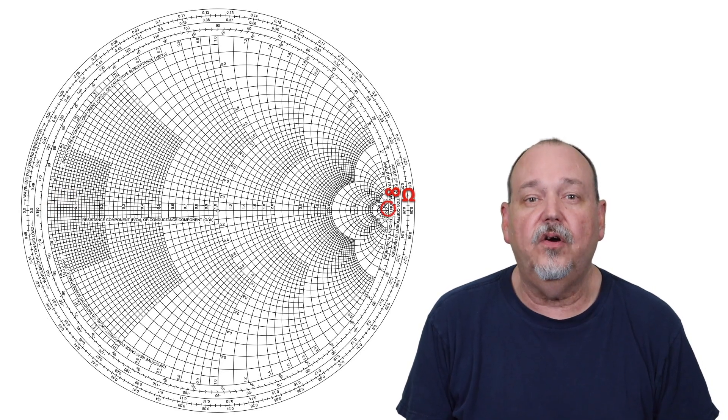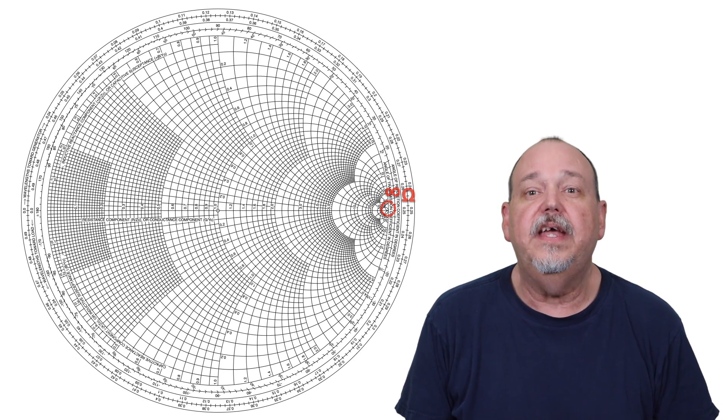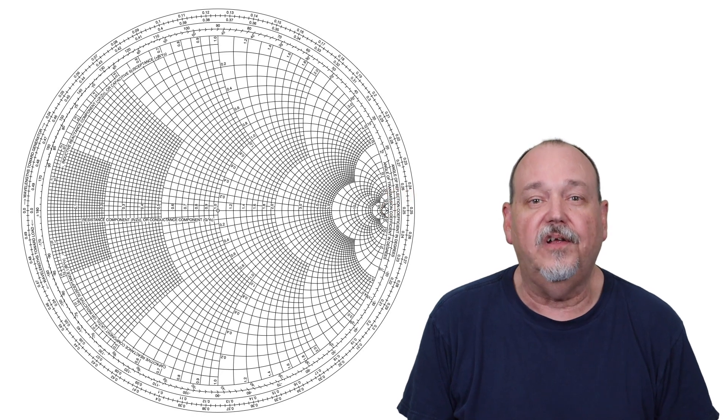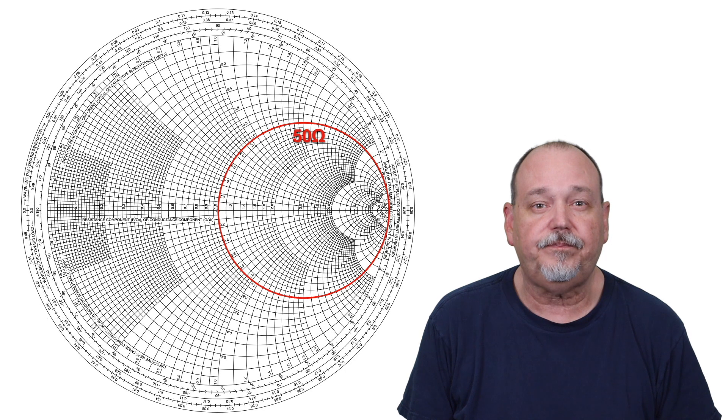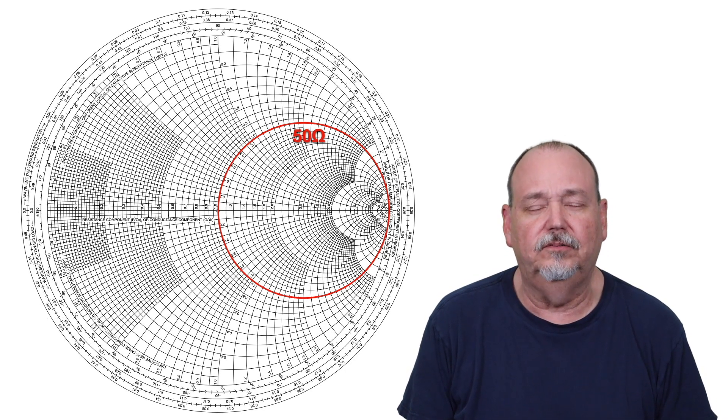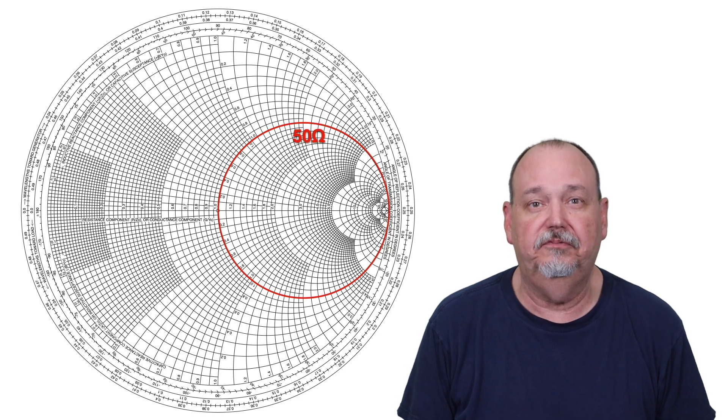Now, either 0 or infinity equates to an infinite SWR. Each point on the pure resistance line has a corresponding resistance circle. Now, anywhere along this 50 ohm resistance circle has a resistance value of 50 ohms.